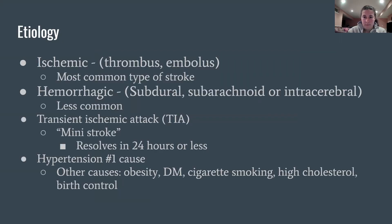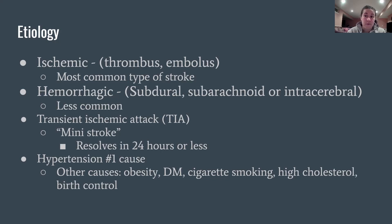There are different types of strokes. The most common is an ischemic stroke — definitely over 60% of strokes end up being ischemic. This means that blood flow is blocked either by a thrombus, which forms in the actual blood vessel itself, or an embolus, which is a floating blood clot that came from somewhere else — most commonly from deep in the body — that ends up lodging in the brain.